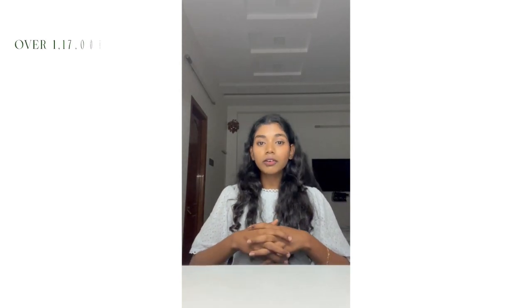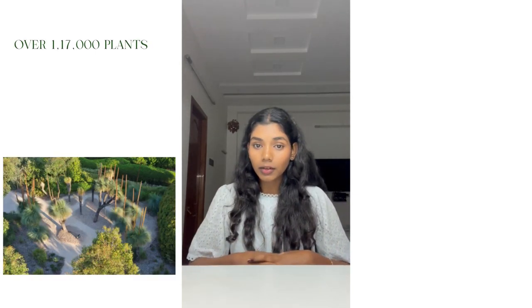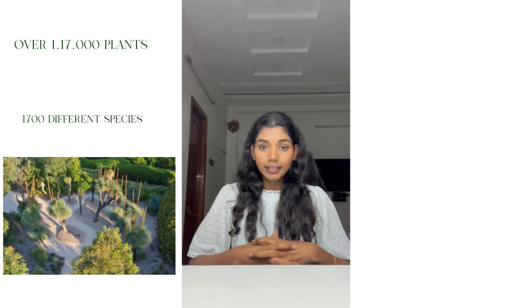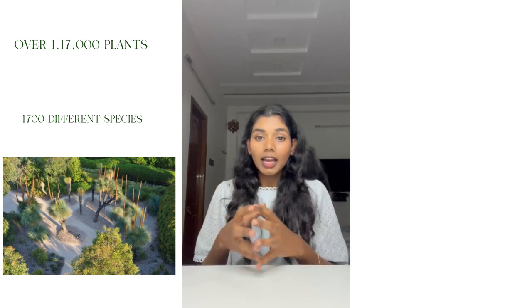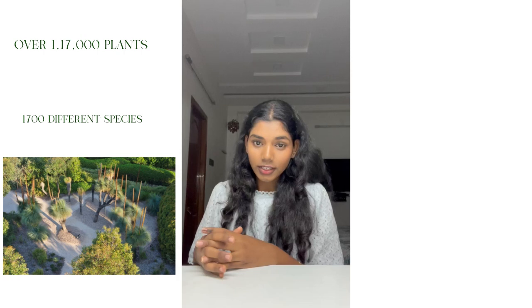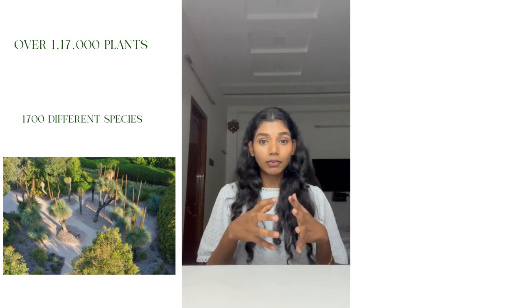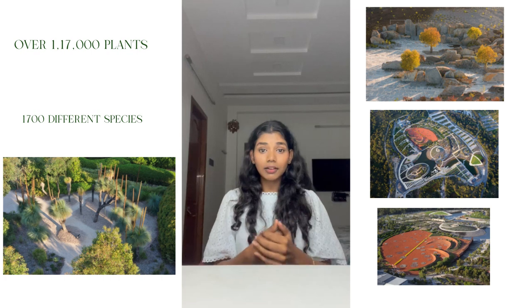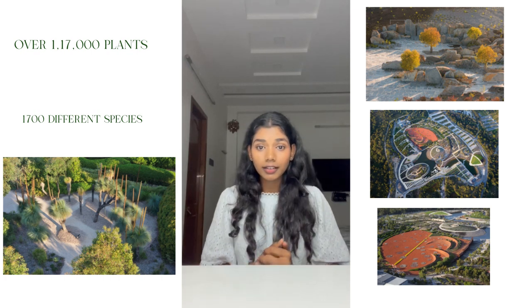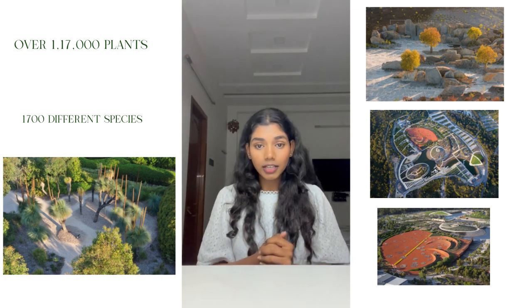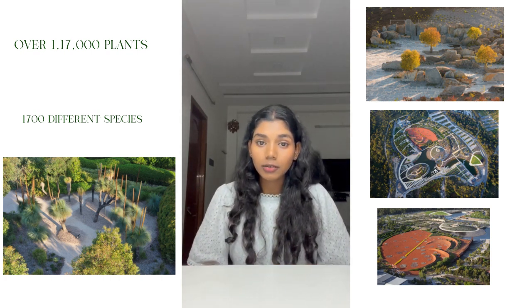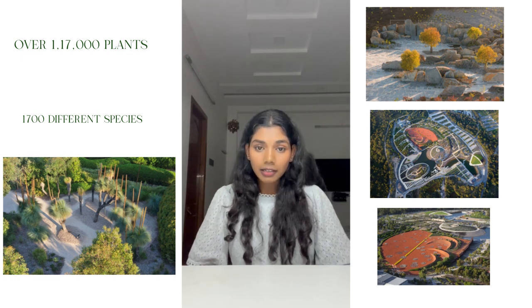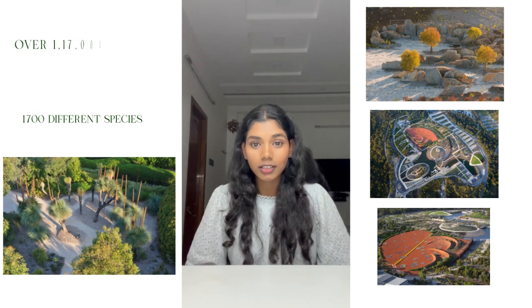There are over 170,000 plants belonging to 1,700 different species. This project is a rehabilitation project — the land before this project was used for quarry. One might think how this land could be fit for a botanical garden. Well, the distillation system and the irrigation system, along with the horticulture planned by Paul Thompson, made this project possible.